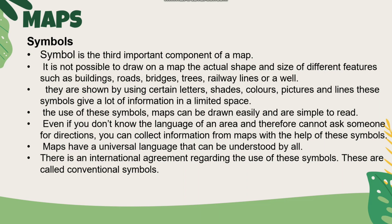The map uses symbols. Symbols represent roads, trees, railway lines, wells, and buildings. Symbols are a universal language that can be understood by everyone in the world.